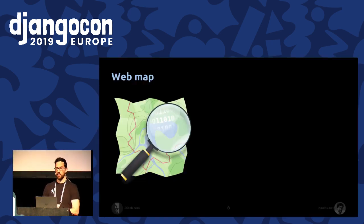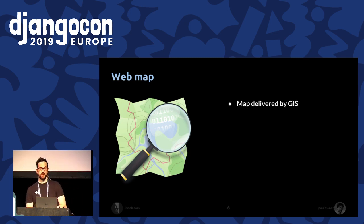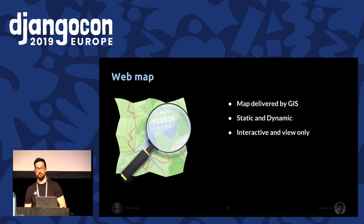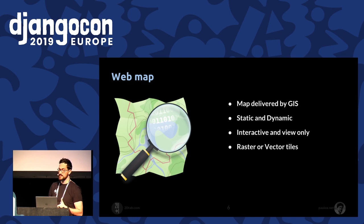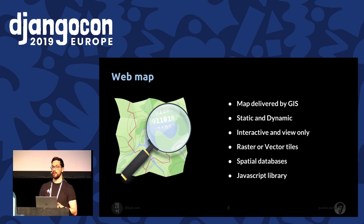So let's talk about web maps. A web map in general is something that allows users to view and search data in a special way, and it's common to add one in your project. Usually a web map is delivered by a geographic information system, and it can be static or dynamic — you can interact with it or maybe only view it. The map can use raster or vector tiles to represent the surface. Usually the data is stored in a special database, and the map will use a JavaScript library to show data on your web page.